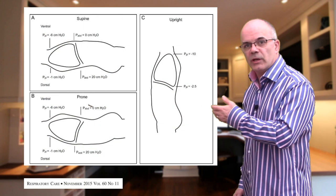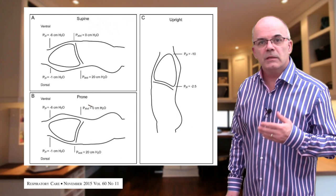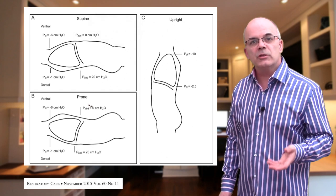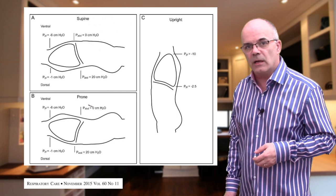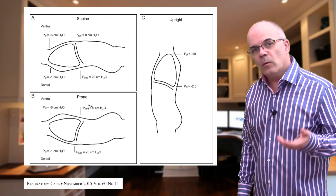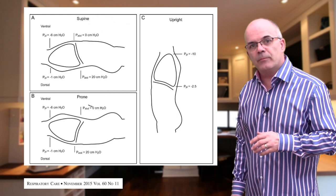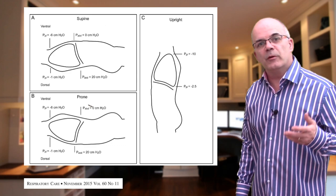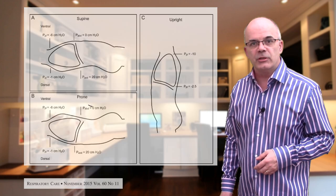Proning the patient is also felt to remove some of the weight of the abdominal contents from the better-ventilated posterior aspect of the lung. In the supine position, pressure on the dorsal part of the lung can be up to 20 centimeters of water. However, when the patient is prone, that pressure drops quite dramatically, allowing both better perfusion and ventilation.